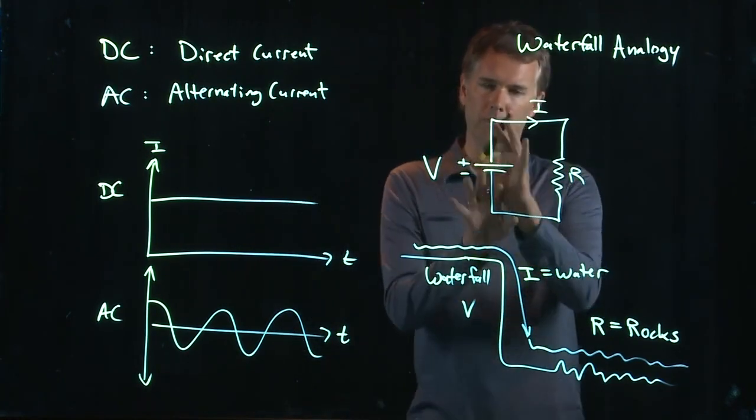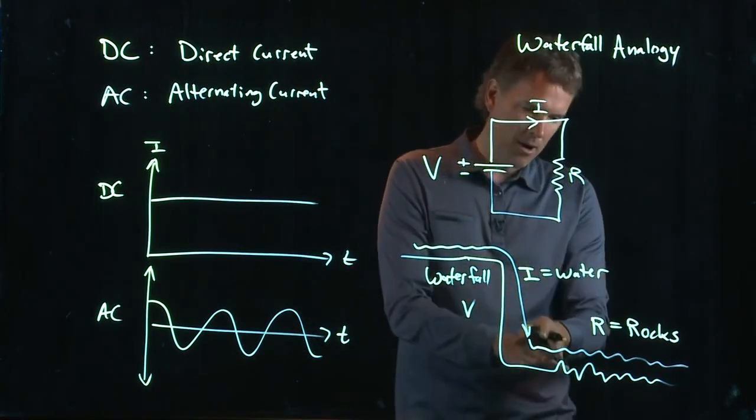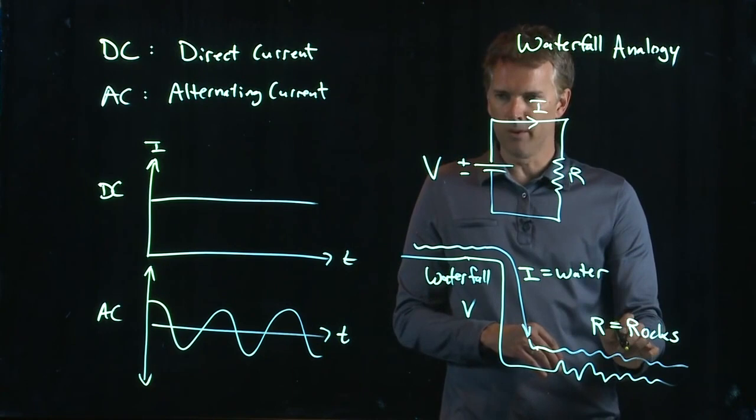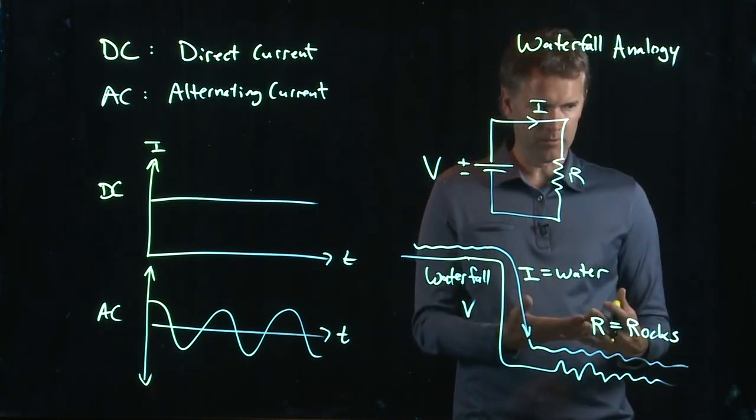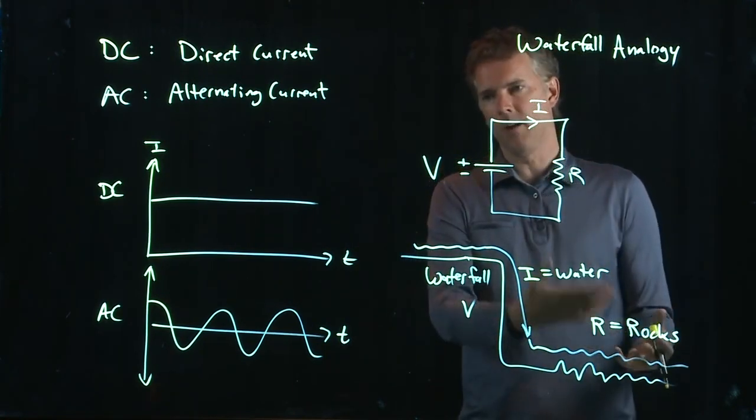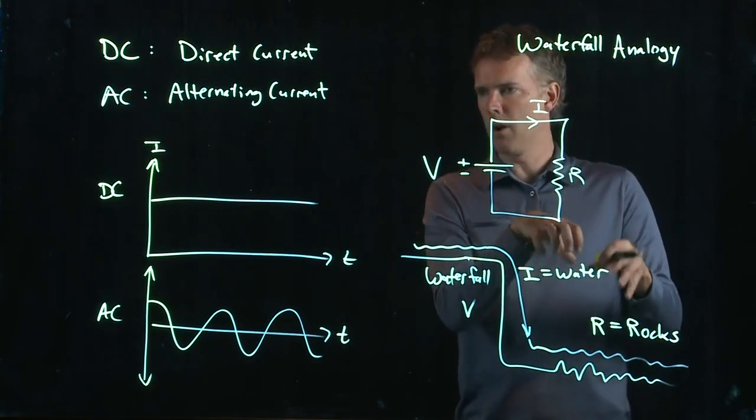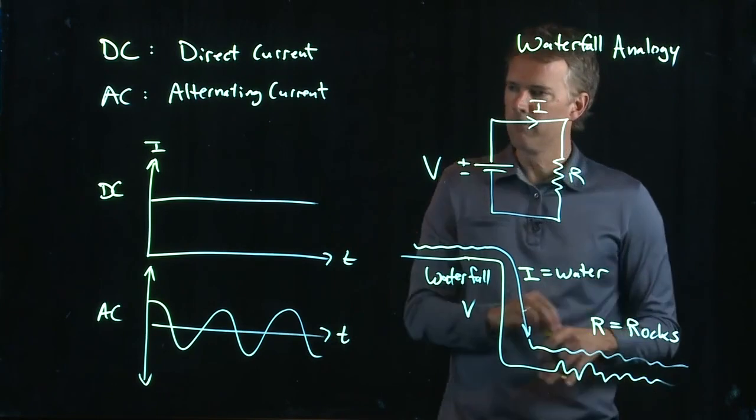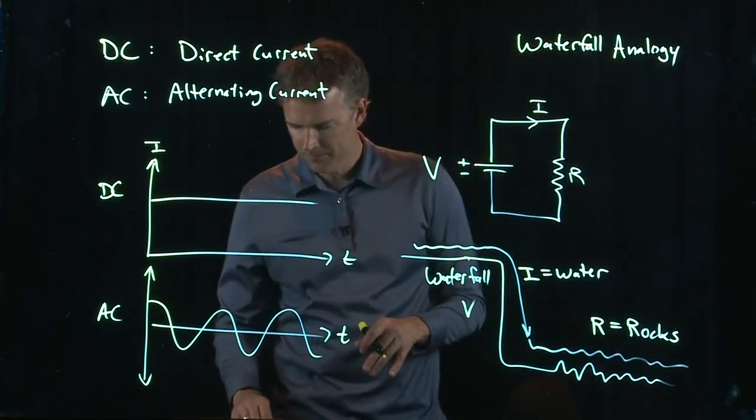Height of the waterfall is the battery. The amount of water flowing is the current. The rocks in the river, those are the resistance. Put a bunch more rocks in there, it's going to agitate the water and slow it down a whole bunch. No rocks, the water is going to flow much more smoothly.